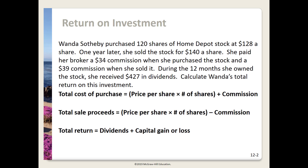Next we're going to calculate the return on an investment. Wanda Sotheby purchased 120 shares of Home Depot stock at $128 a share. A year later she sold the stock for $140 a share. She paid her broker a $34 commission when she purchased the stock and a $39 commission when she sold it. During the 12 months she owned the stock she received $427 in dividends. Calculate Wanda's total return on this investment.